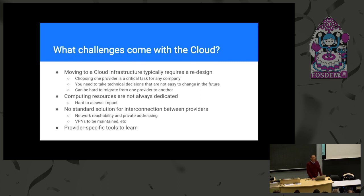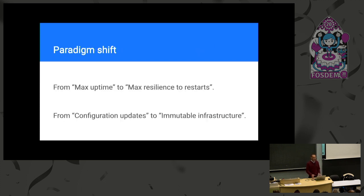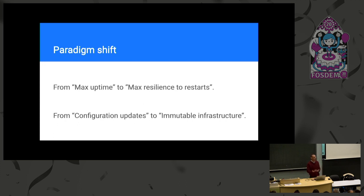Sometimes you have tools that are specific to those cloud providers. In general, starting from around 2001, we moved from a server-side world where maximum uptime was a reasonable goal, to focusing on maximum possible resilience to application restarts. We moved from configuration updates to an immutable infrastructure, where instead of changing configuration you change the components involved — for example, deploying new container images.